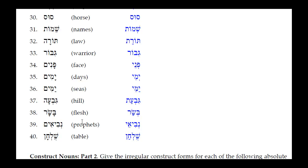Number thirty-eight: Shulchan — the only change is in the closed unaccented syllable of Khet Kamets Nun Sofit, where the Kamets reduces to a Patak. The Kibbutz under the Shin remains the same. Result: Shulchan.